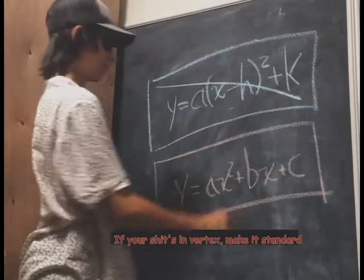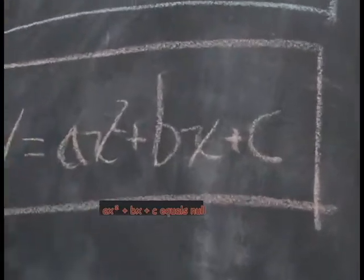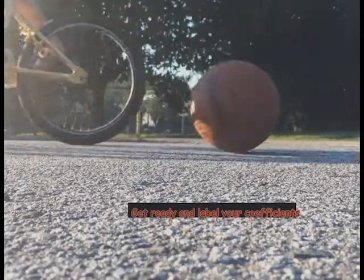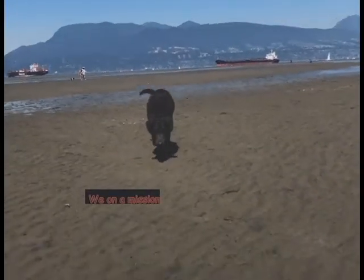Goodman ballin' with the VSBO banyard. If your shit's vertex, make it standard. AX square plus BX plus C equals null. Make sure that your pencil isn't dull. Get ready and label your coefficients. We on a mission.